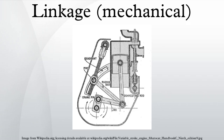A mechanical linkage is an assembly of bodies connected to manage forces and movement. The movement of a body, or link, is studied using geometry so the link is considered to be rigid.